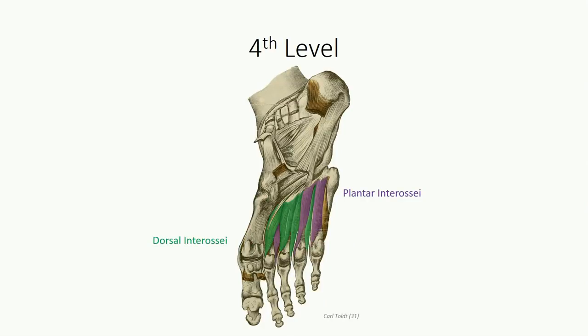In our fourth plantar layer, we find our dorsal and plantar interossei. The plantar interossei are unipennate, as we saw in the hand, while the dorsal interossei tend to be bipennate. We have three plantar interossei that insert on the medial shafts of the third through fifth proximal phalanges and contract to serve as adductors on the digits. The four dorsal interossei attach to the surfaces furthest away from the midline of the proximal phalanx of digits 2, 3, and 4. As with the hand, these will contract to cause abduction of the digits.